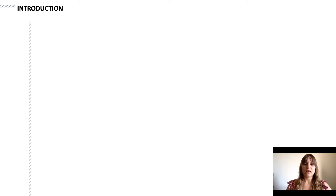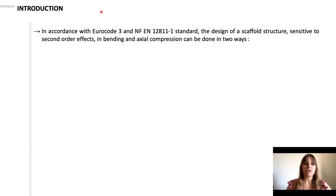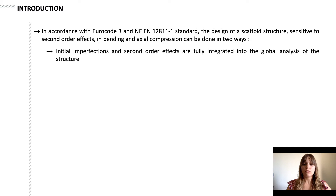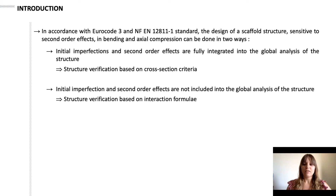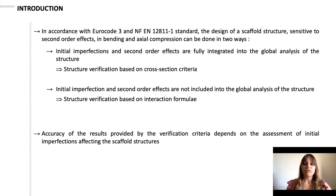In Europe, the design of scaffold structures must be carried out in accordance with these two codes. There are two methods. The first consists of taking into account initial imperfections and second-order effects in the global analysis, so the verification of the structures is made from the resistance criteria in cross-sections. The second method does not require introducing initial imperfections and second-order effects in the global analysis, so the verification must be carried out using the interaction formula. Whatever method is used, the accuracy provided by the verification criteria is based on the assessment of the initial imperfections affecting the scaffold structure.